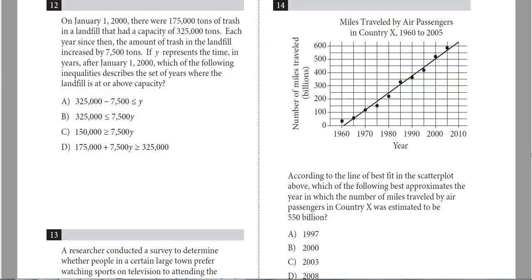All right, number 14 here, we have a little chart and graph. I haven't really had many of these so far, so let's take a look at it. We have the miles traveled by air passengers in a country from 1960 to 2005. And I always kind of, before I even start these problems, I like to kind of see what's on the axis. So we have the years on the bottom. Over here, we have the number of miles traveled in billions. So just remember, all these numbers represent billions. According to the line of best fit in the scatter plot, which best approximates the year in which the number of miles traveled by air passengers in country X was estimated to be 550.